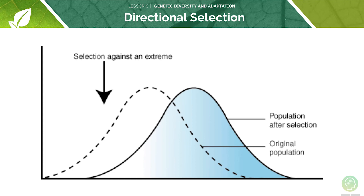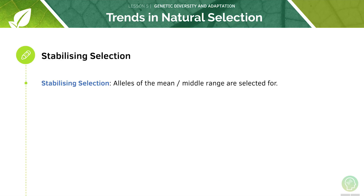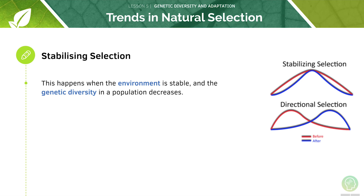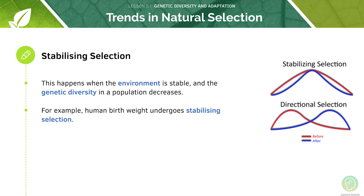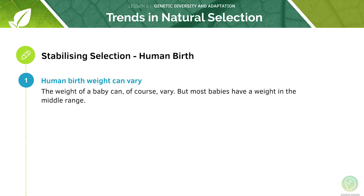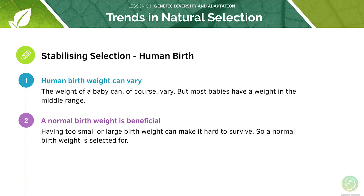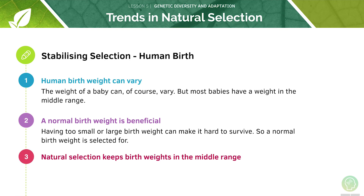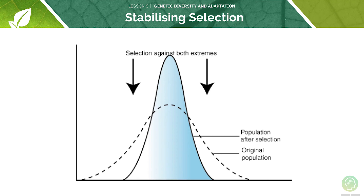In stabilizing selection, the alleles of the mean or middle range are selected for. This happens when the environment is stable and the genetic diversity in a population decreases. For example, human birth weight undergoes stabilizing selection. The weight of a baby will always vary, but most babies have a weight in the middle range. Having too small or too large a birth weight can make it difficult to survive, so natural selection keeps the birth weight in the middle range. This graph shows stabilizing selection, where selection pressure has been applied against both extremes.